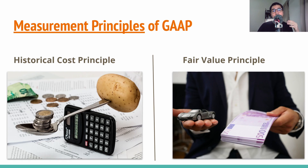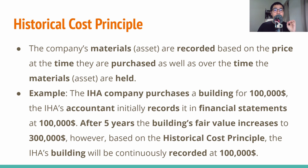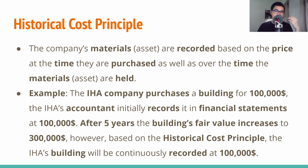Now we're going to check out the first type of measurement principle, which is the historical cost principle. The historical cost principle helps us record the company's assets on the financial statements at their cost. This is true not only at the time the asset is purchased, but also over the time the asset is held. If you want to know more about the historical cost principle, you can refer to the example in the slide.